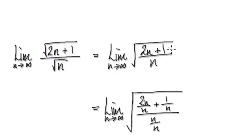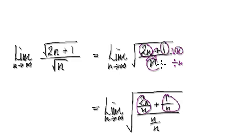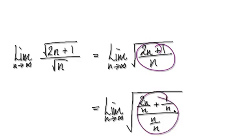So now, once you're here, divide top and bottom by n. So that would mean this thing divided by n — that's this bit. And then 1 divided by n — that's this bit. And then down here you've got n divided by n, n divided by n.